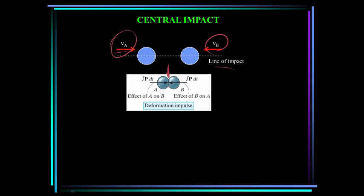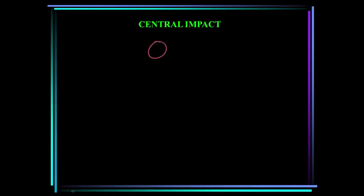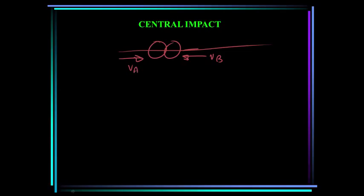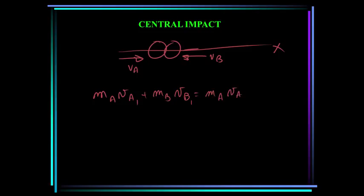There are two primary equations we use when solving impact problems. For the system of particles, there are no external forces in the x direction, so momentum is conserved in that direction. We write this as: the mass of A times its initial velocity before impact, plus the mass of B times its velocity before impact, equals the mass of A times its velocity after impact, plus the mass of B times its velocity after impact. This is conservation of linear momentum in the x direction.